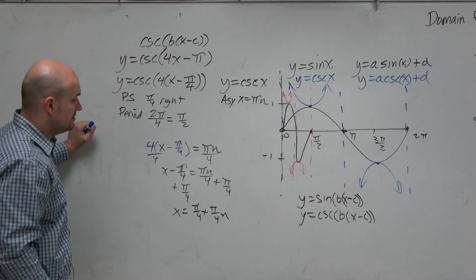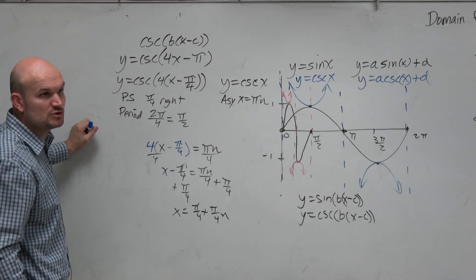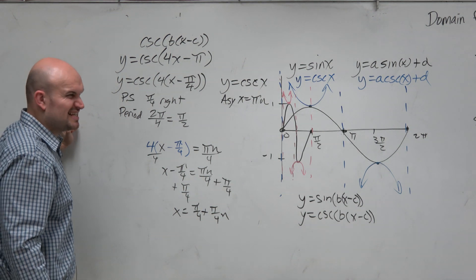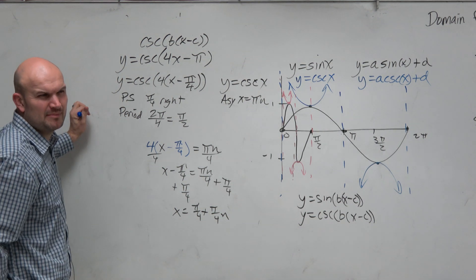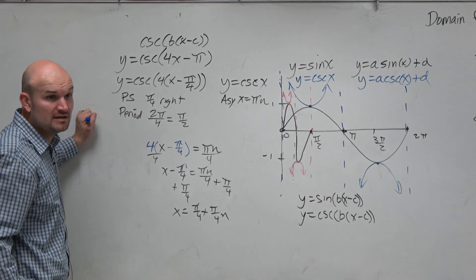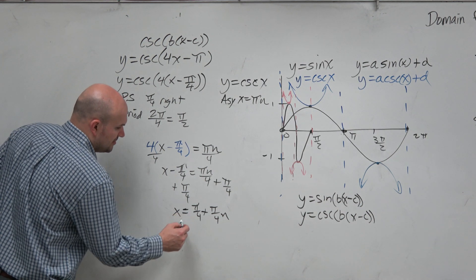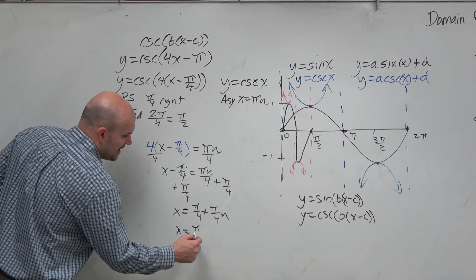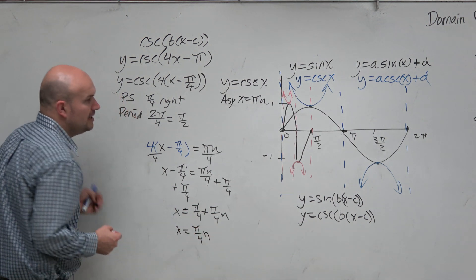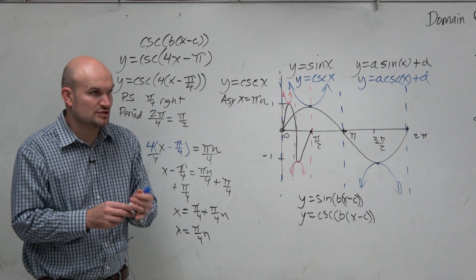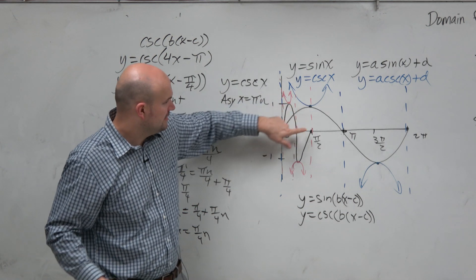Now that is correct, but that's probably not what you guys would see on a multiple choice question answer. Because that's not really our simplified answer. Does anybody know what a more simplified answer would be for that? Pi over 4n. Yeah, just x equals pi over 4n. Because look at this, guys. Watch. Look, look, look.